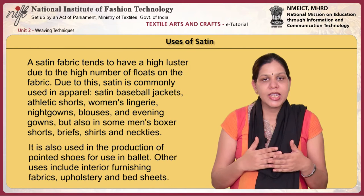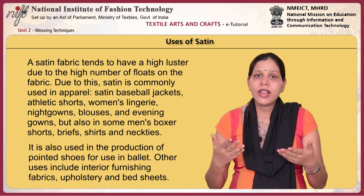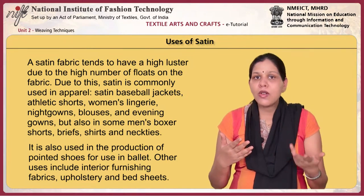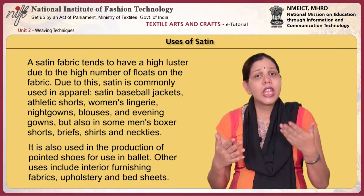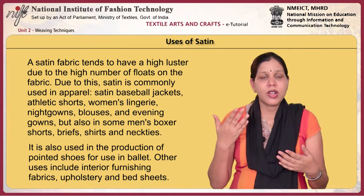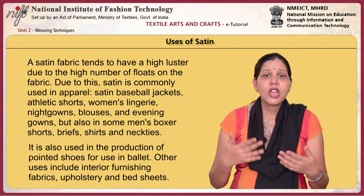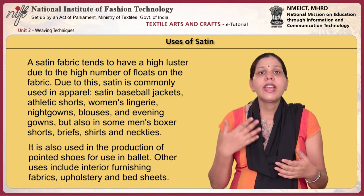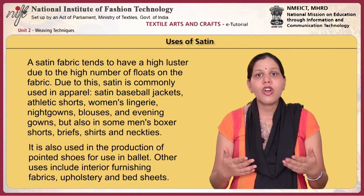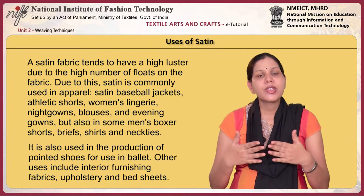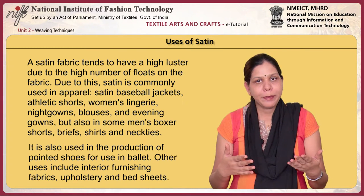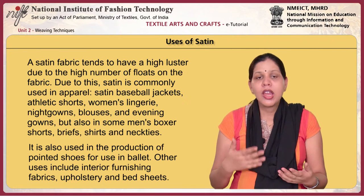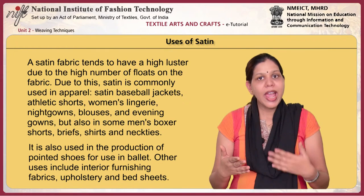Satin is used in baseball jackets, athletic shorts, women's lingerie, nightgowns, blouses, evening gowns, men's boxer shorts, briefs, shirts and neckties. It is also used in the production of pointe shoes for use in ballet. Other uses include interior furnishing fabrics, upholstery and bed sheets.